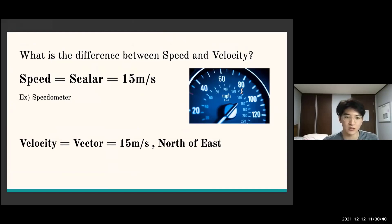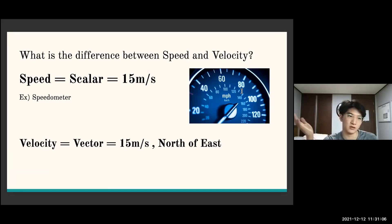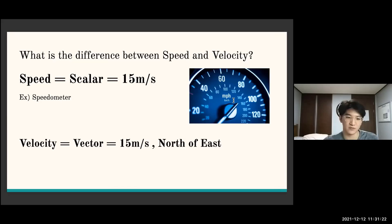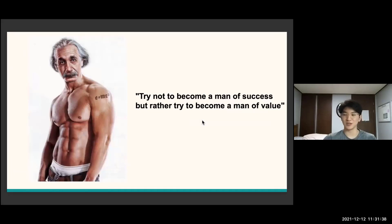As mentioned at the start, speed is a scalar and velocity is a vector. We can see this in cars: cars have speedometers, and the reason it's called a speedometer is because it only expresses speed — it does not express velocity, because it doesn't tell you the direction the car is going. So a speedometer shows something like 50 miles per hour with no direction. Speed is scalar; velocity is vector and includes both magnitude and direction.